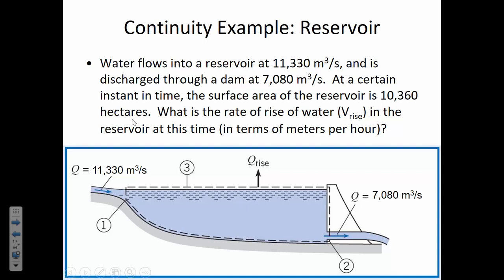So what that means is that the inundation of surrounding wetlands — as the water level gets higher and higher, the area of the surface of a reservoir is going to increase. Right now the area is 10,360 hectares. Does anybody know what a hectare is? A hectare is 100 meters by 100 meters, so it's 10,000 meters squared per hectare.